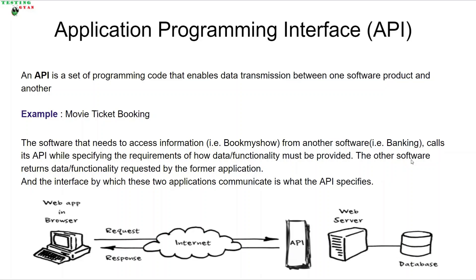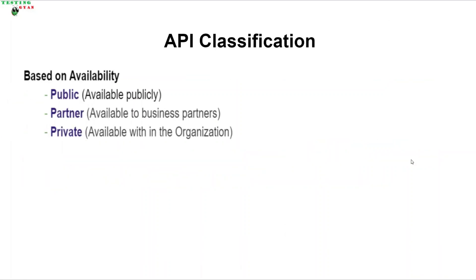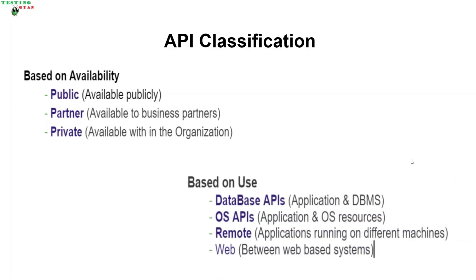Now APIs are further classified based on their availability and based on their usage. Based on their availability, there are three types: public, partner, and private. Public APIs are those APIs which are publicly accessible to anyone, like Google APIs. For example, Google email APIs are publicly accessible — using those API calls, you can send an email or you can read the content of an email.